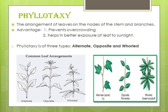In alternate phyllotaxy, a single leaf is borne alternately at each node — one leaf per node, not on both sides. Examples are rose, castor, peepal, china rose, and sunflower. In opposite phyllotaxy, two leaves are borne on either side of the same node — two leaves on one node. Examples are tulsi, jasmine, and guava.